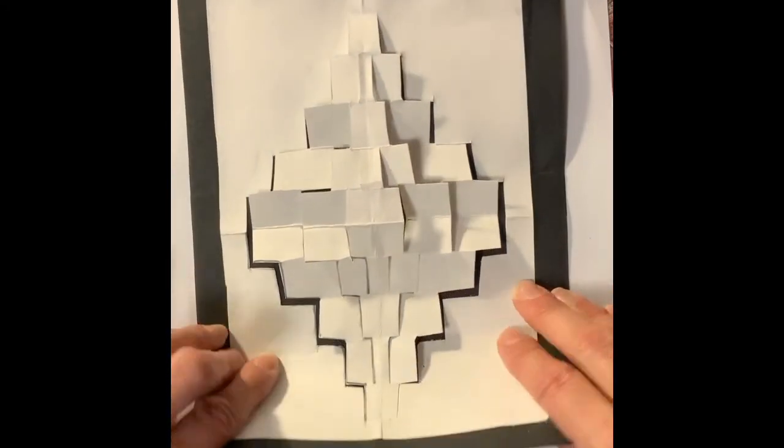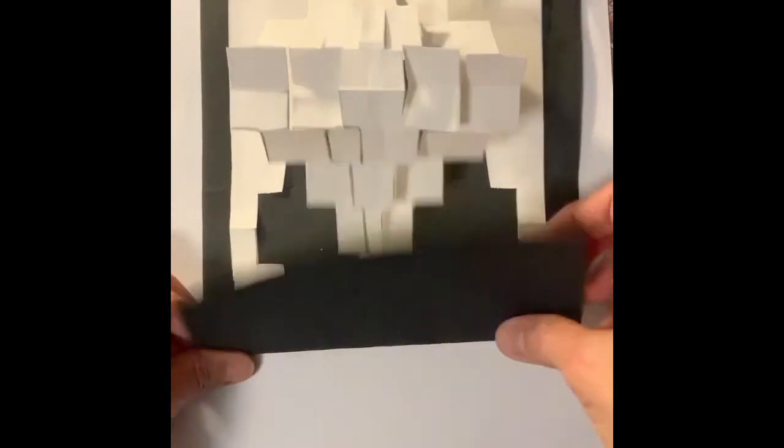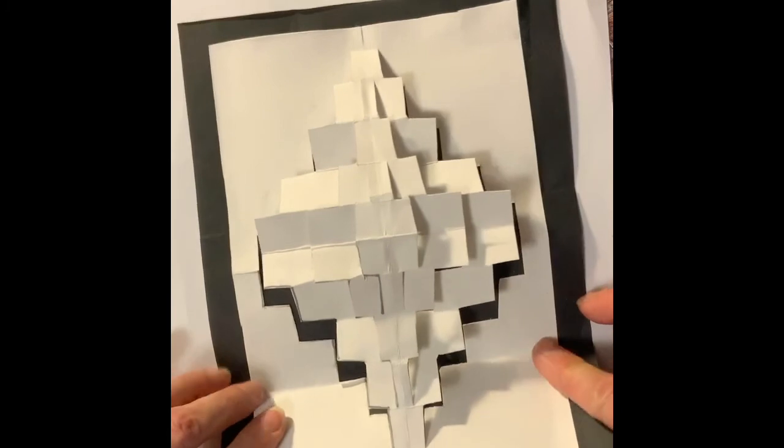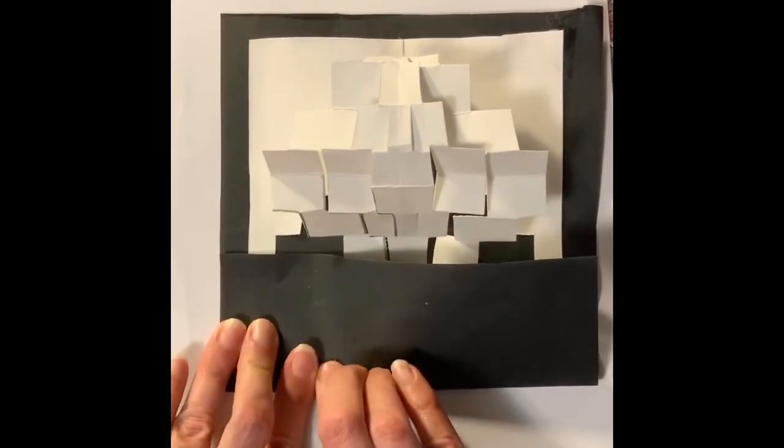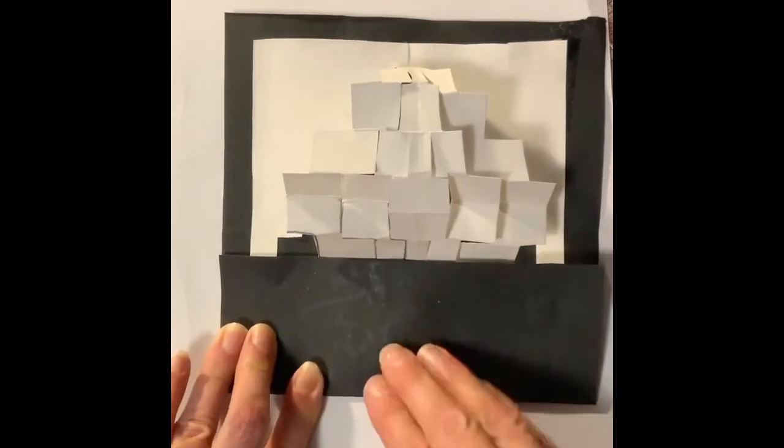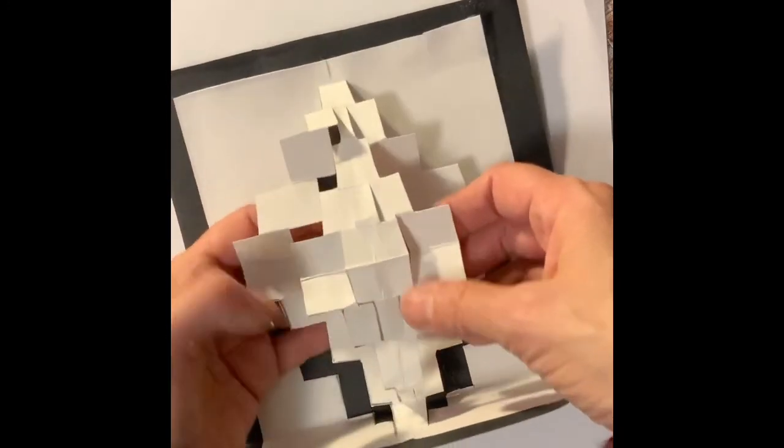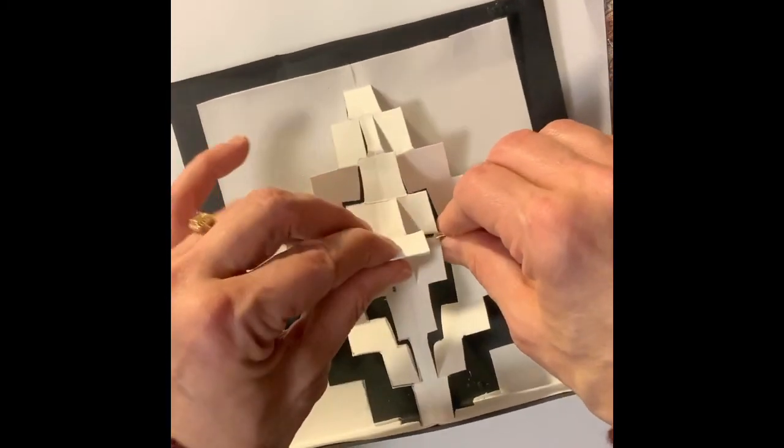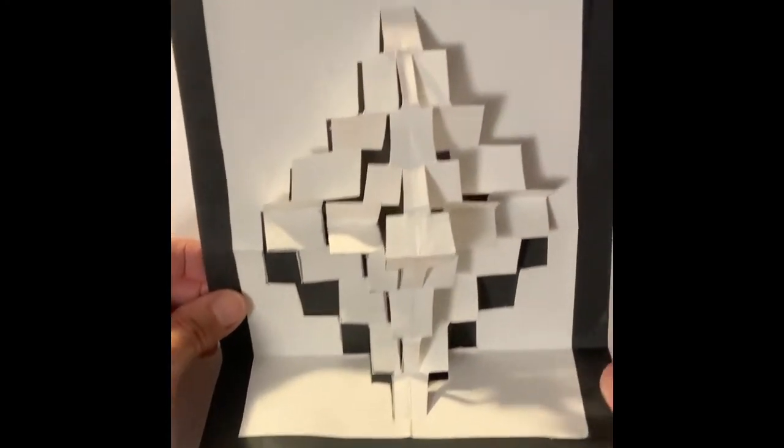So when I'm done, I'm going to go ahead and fold it towards the bottom where I folded it earlier. A little crooked, there we go, that's better. You can see that when I fold it, it pushes the design up and out a little bit more. So I'm going to re-fold some of the things that got squished. And there is my kuragami.